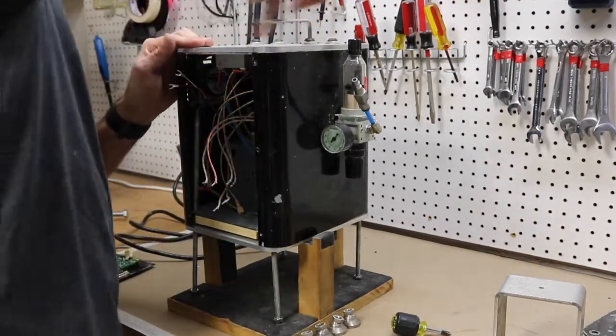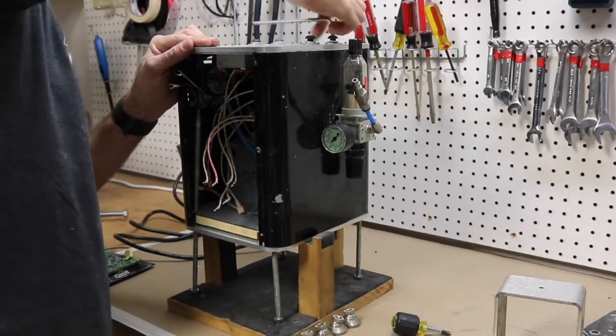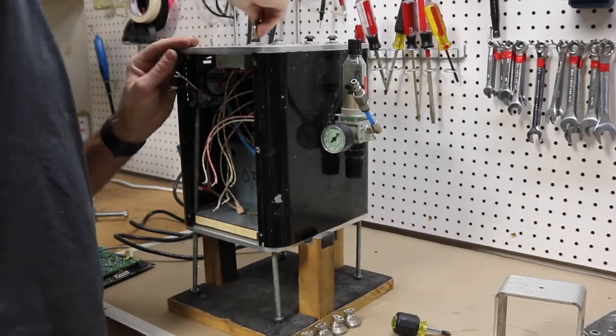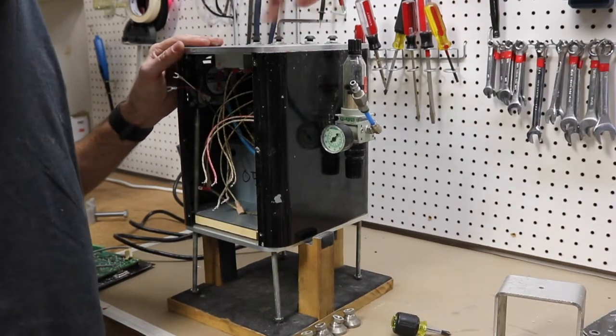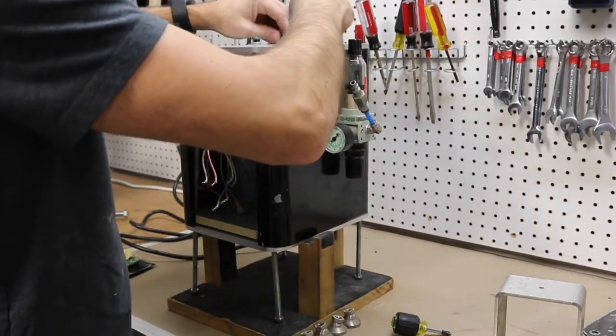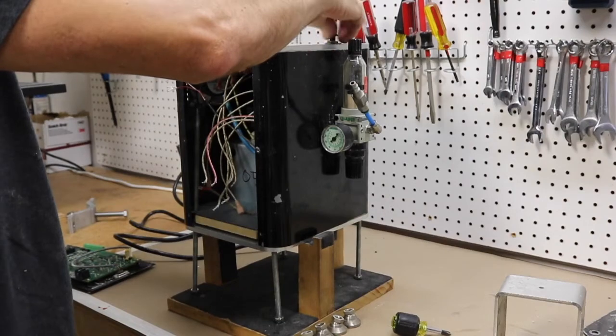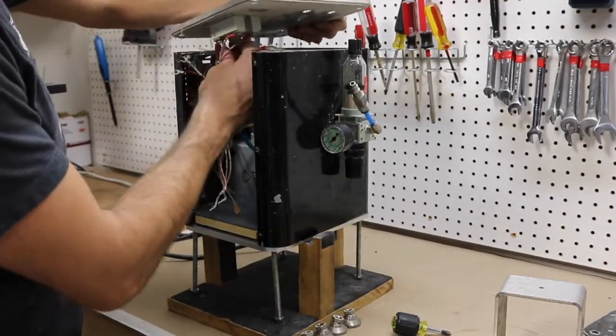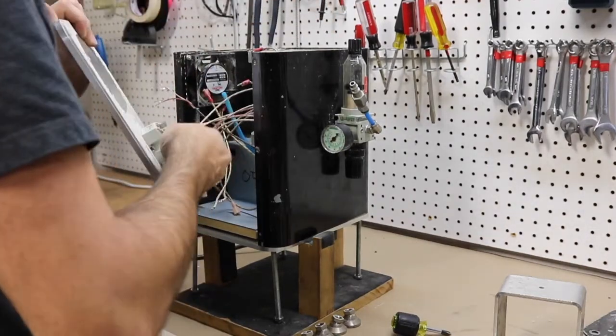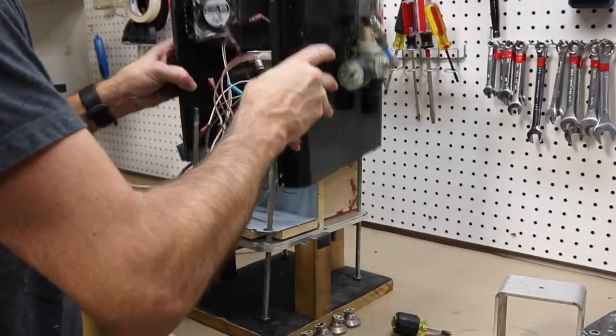So I'm going to use my 7/32nds Allen, take out these four screws. What that's going to allow me to do is get the housing off and get better access to the unit. Got one wire there. Got my base plate, set that aside.